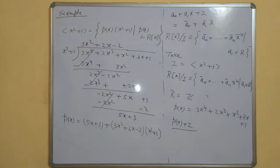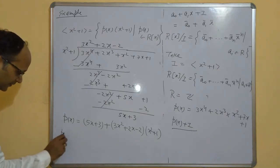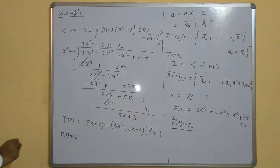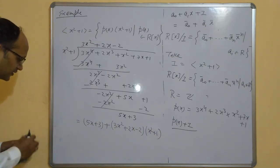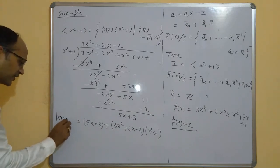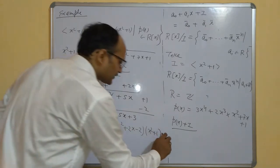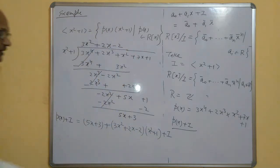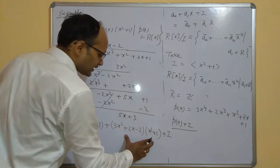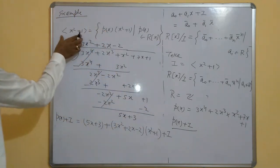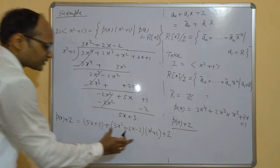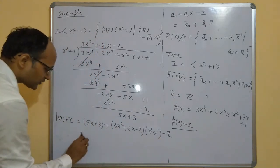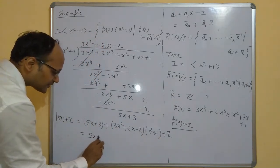Now suppose I want to determine p(x) + I. We add I to both sides: p(x) + I = (5x + 3) + (3x² + 2x − 2)(x² + 1) + I. Since (3x² + 2x − 2)(x² + 1) is a multiple of x² + 1, it belongs to I. So p(x) + I = (5x + 3) + I.